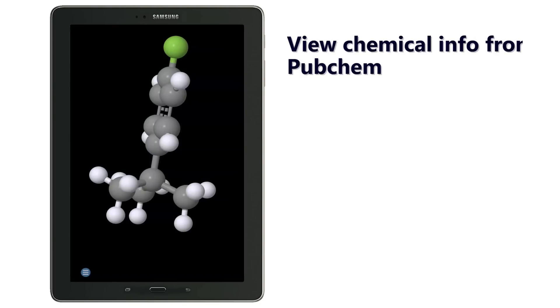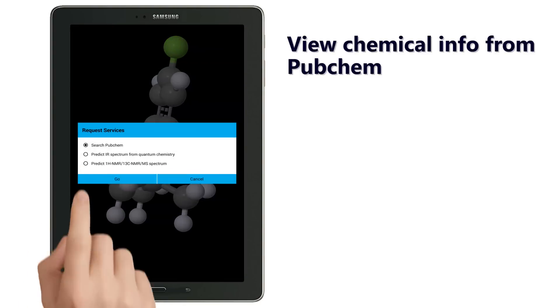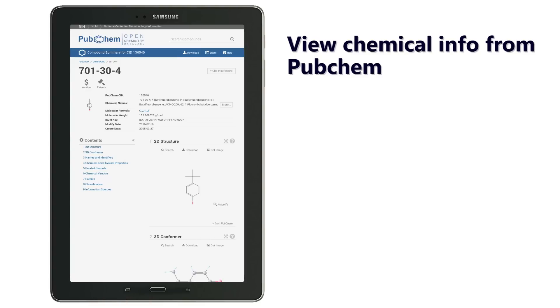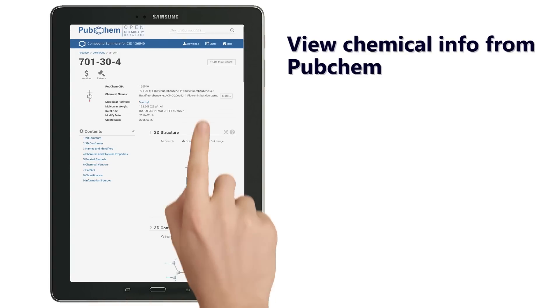Now let's search for available chemical information for this molecule on PubChem. This will open a new page to show the result page from the PubChem database. Scroll down to view different data.